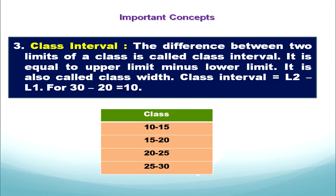We can calculate the class interval by subtracting the lower limit from the upper limit. For example, here the class is 10 to 15. The lower limit is 10 and the upper limit is 15. So the class interval is 15 minus 10, which equals 5. Hence we have learned about class interval.